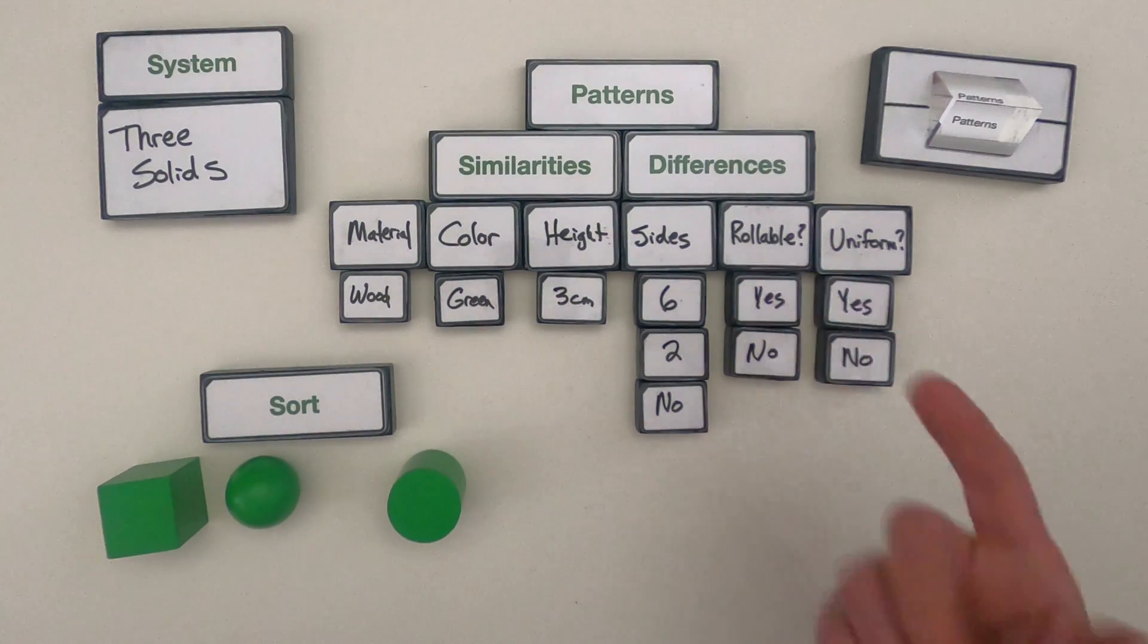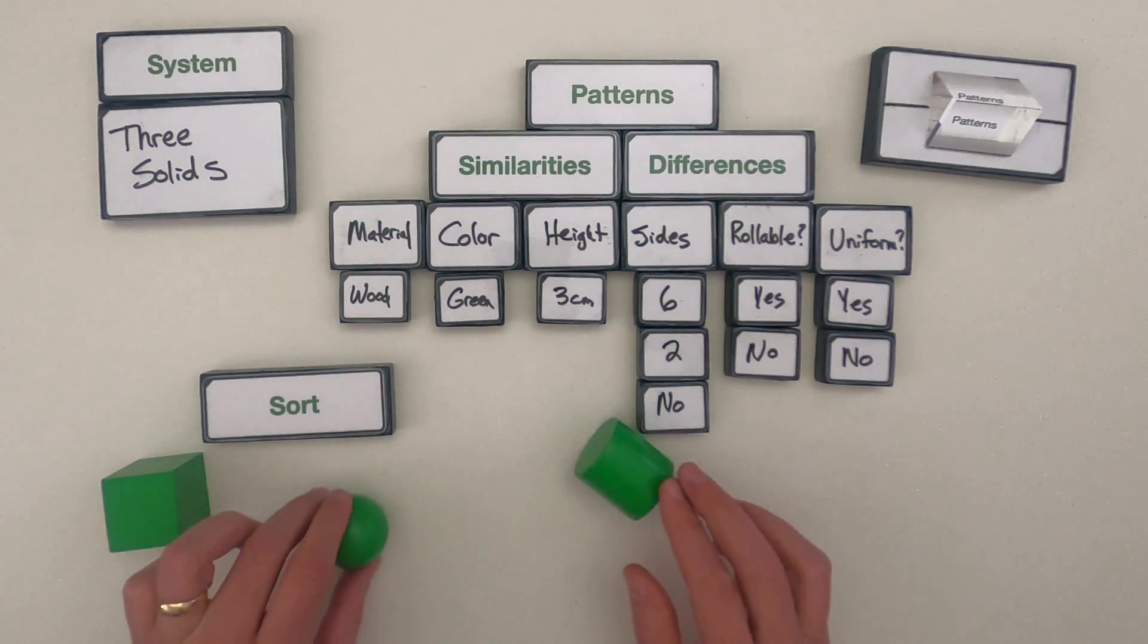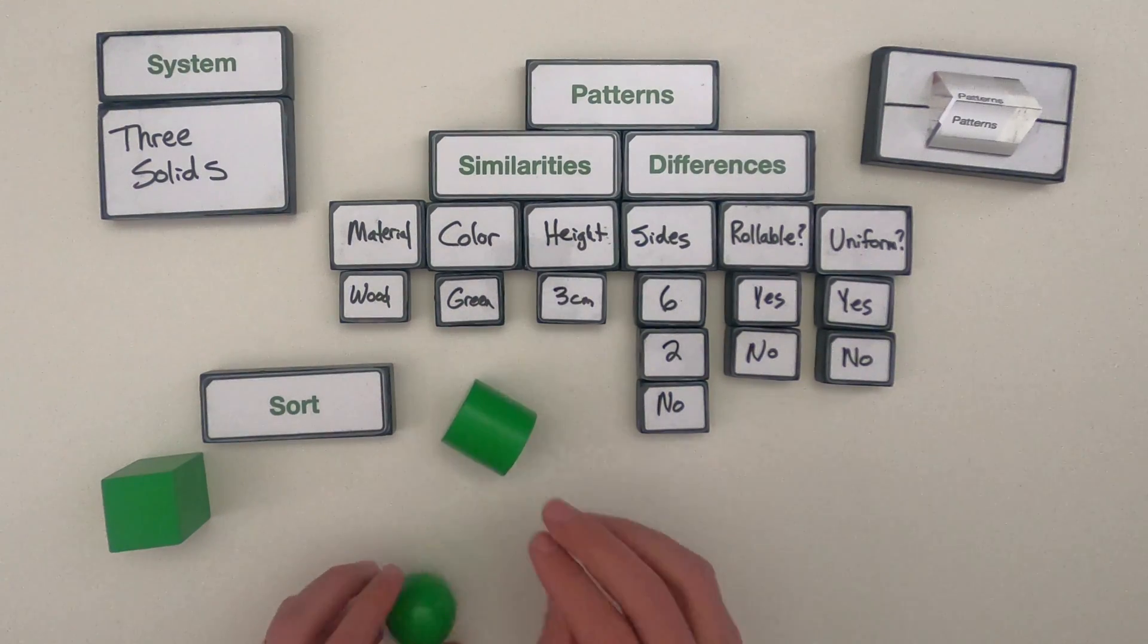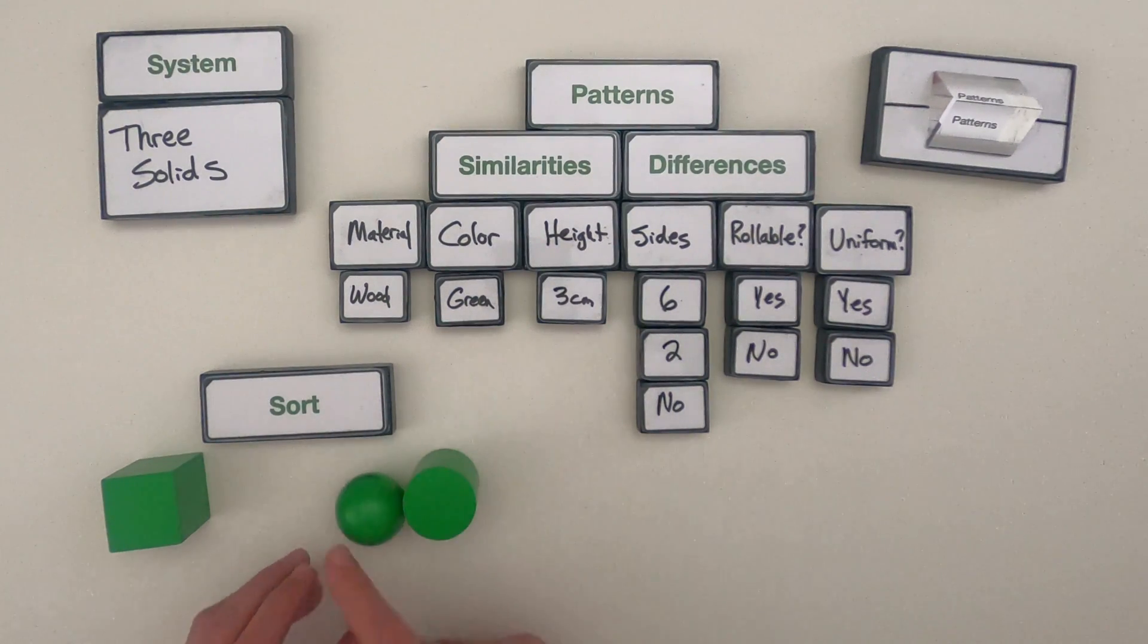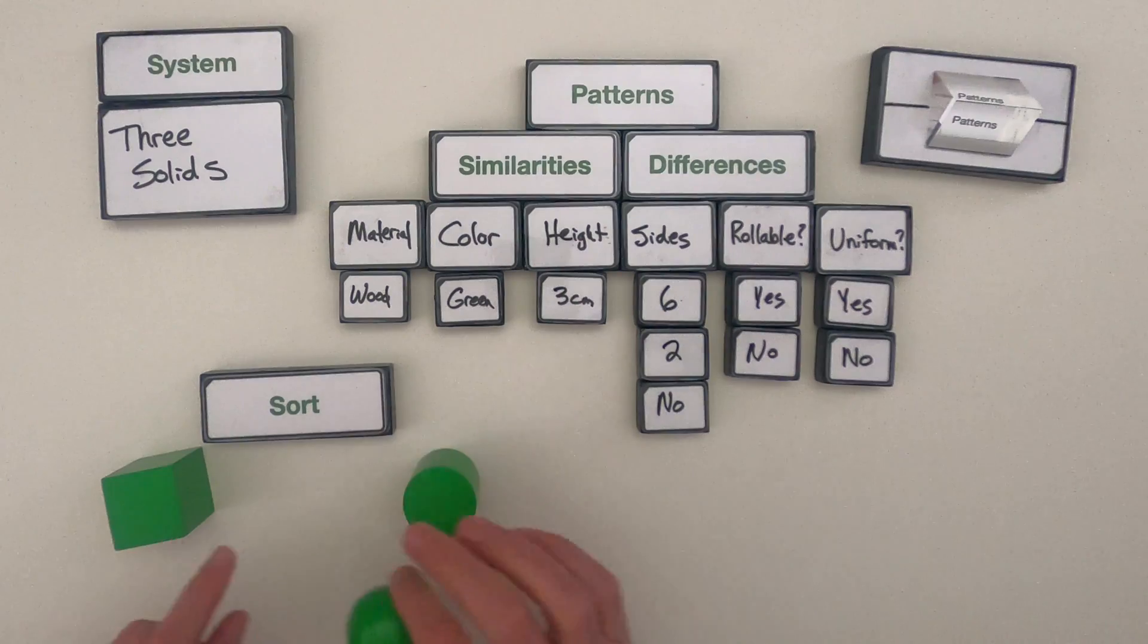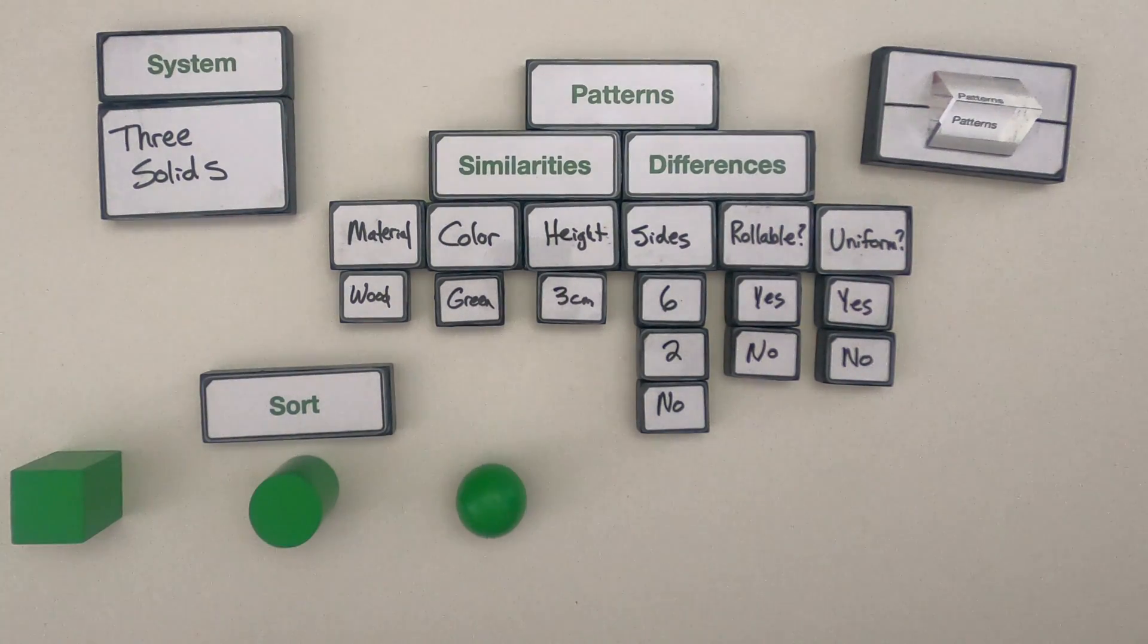I could also look at, are they rollable or not? So a cube is not going to be rollable, but a cylinder and a sphere are. And there's something about the way that a cylinder rolls versus a sphere that tells me a little bit more about it. Or the number of sides. So we go from a cube that has six sides to a cylinder that has two, and then a sphere that has no sides. So that'd be another way to sort it.